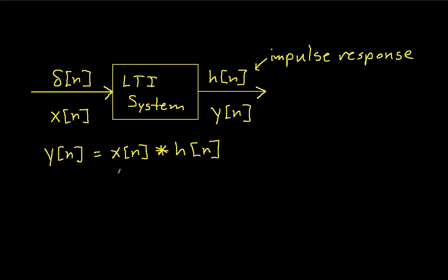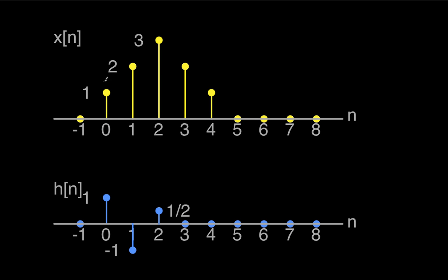Let's figure out how this works by doing an example. We'll assume that we know the impulse response of the system, given by h of n: a 1 at time 0, a minus 1 at time 1, and one half at time 2. The input we want to compute the system's response to is x of n, which is 1 at time 0, 2 at time 1, 3 at time 2, 2 at time 3, 1 at time 4, and 0 everywhere else.